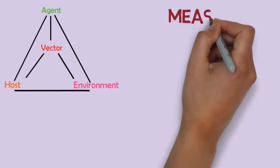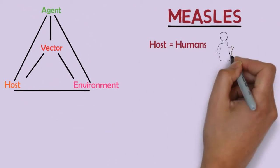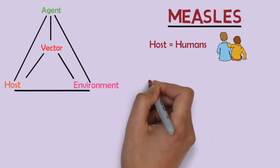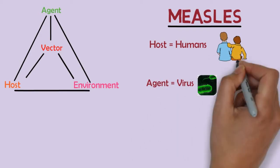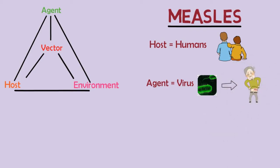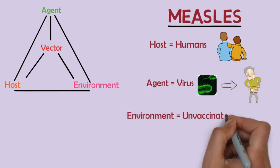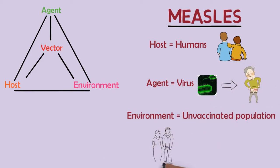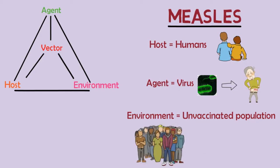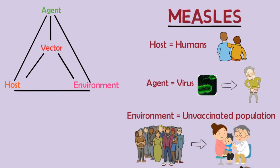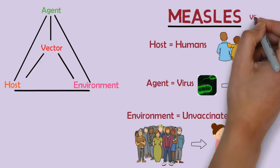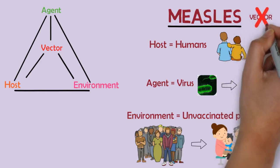In measles, the host is a human who is susceptible to measles infection. The agent is a highly infectious virus that can produce serious disease in humans. And the environment is a population of unvaccinated individuals, which enables unvaccinated susceptible individuals to be exposed to those who are infectious. The vector in this case is relatively unimportant.